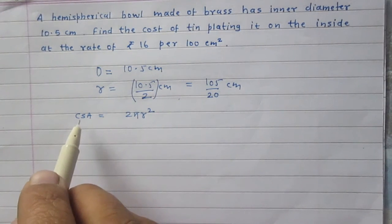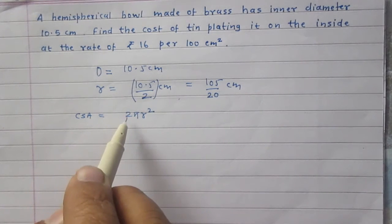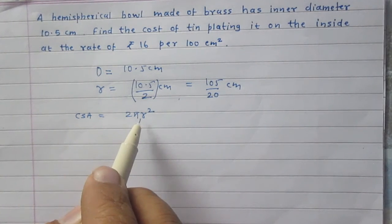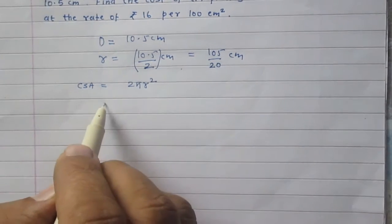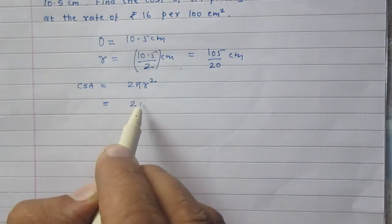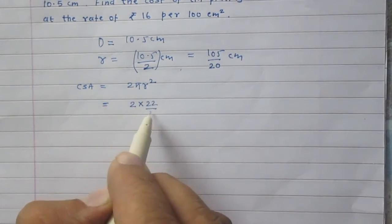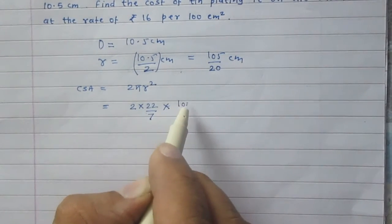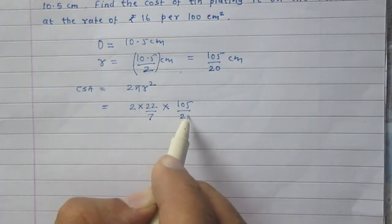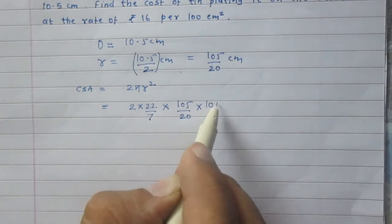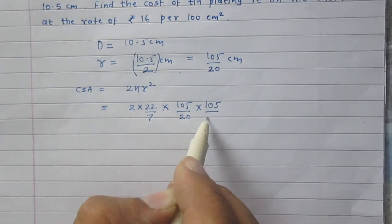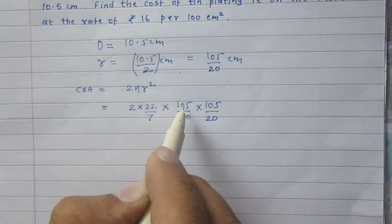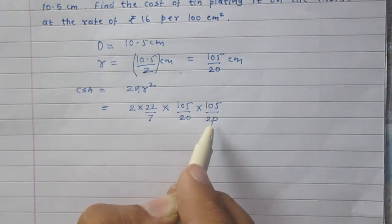After substituting the values, we will get 2 × 22/7 (which is π) × r². r square is (105/20)², which we can write as 105/20 × 105/20.